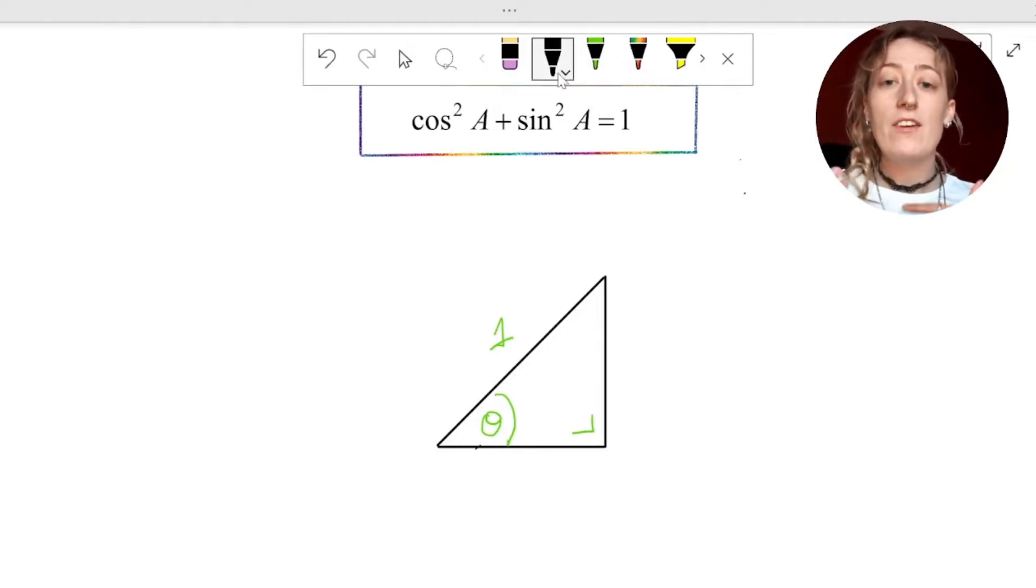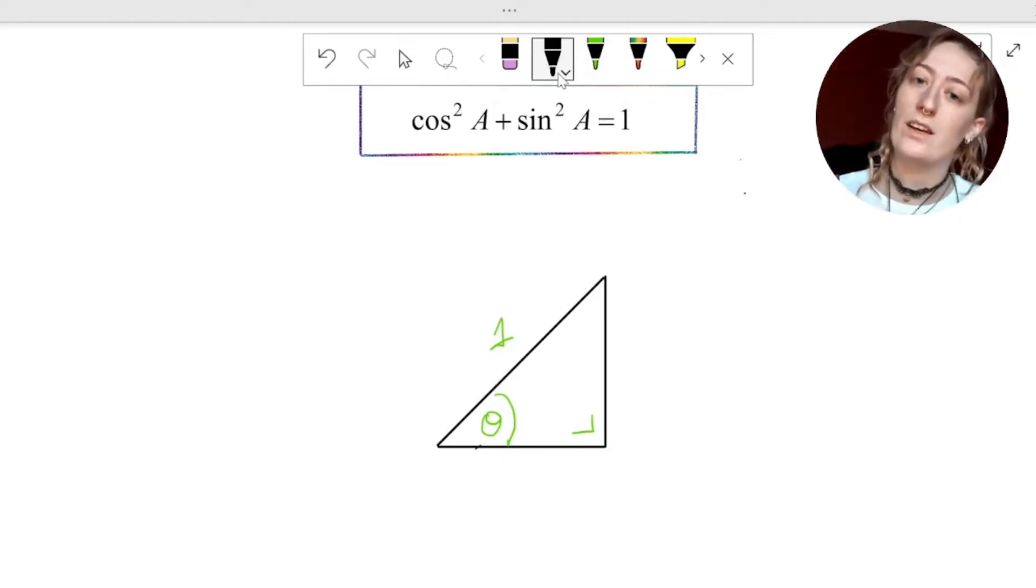Now what's interesting about this is that if you know the angle theta, and if we know that the hypotenuse is 1, then we can automatically find out what the opposite side is and the adjacent side. I'm going to show you that now.